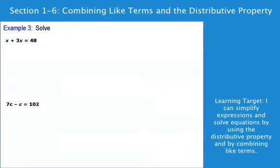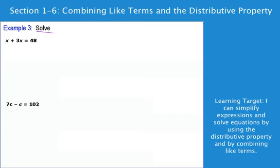Now we get to solving. Notice I have 1x here and 3x's here. A lot of people when they do this will try to divide by 3, but then what do you do with the other x? Well, the answer is neither — I can't divide right now. Before I solve, I need to make sure it's as simple as I can possibly get. I need to simplify before I solve. So here I have 1x and 3x: that's 4x's. So 4x equals 48, and in order to figure out what 1 group of x is, divide it out. X equals 12. Just like yesterday.